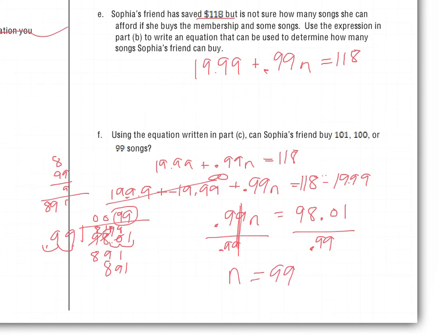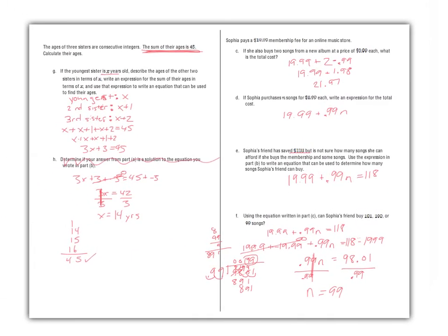That's our quick lesson for today. In most of these word problems, we're describing the sum of some things — it's all about modeling what the individual things are that add up to a total. We had a fee plus 99 cents per song adding up to $118; we had the ages of three girls as x, x plus 1, and x plus 2 adding up to 45; and in the previous examples, we had lengths of known and unknown parts of a wall adding up to the entire wall length. Flip over to your alone time and get your practice done.